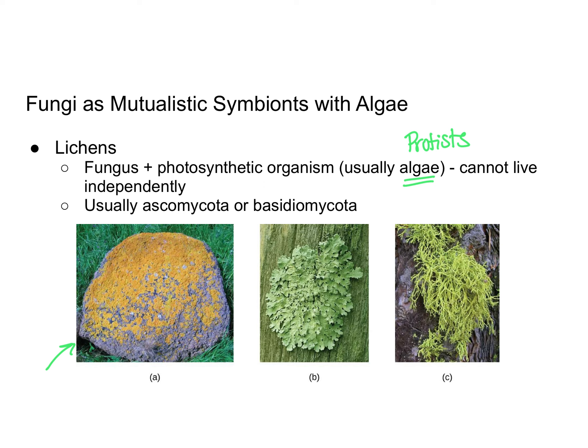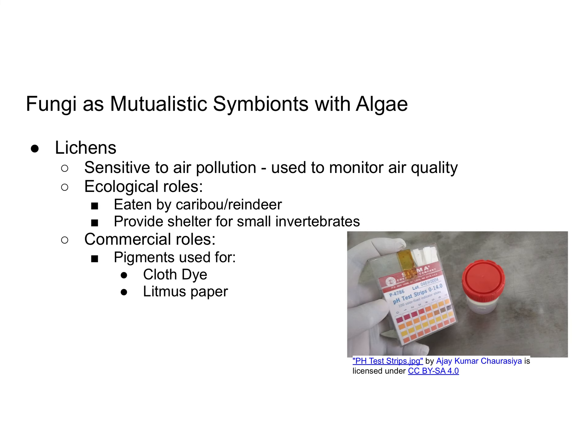Lichens can take different forms and colors. They are sensitive to air pollution, so scientists can monitor air quality in an area by looking at the variety and abundance of lichen. Lichens also serve ecological roles as food for caribou and reindeer, since lichens can live in harsh environments like the tundra and taiga where those animals live. Lichens also provide shelter for small invertebrate organisms. Commercially, pigments in lichens can be used to dye cloth or to make litmus paper, which changes color to indicate pH level.